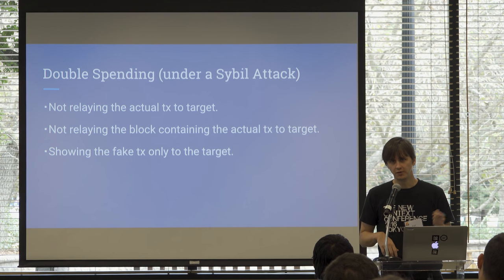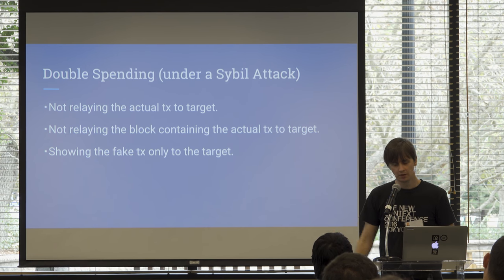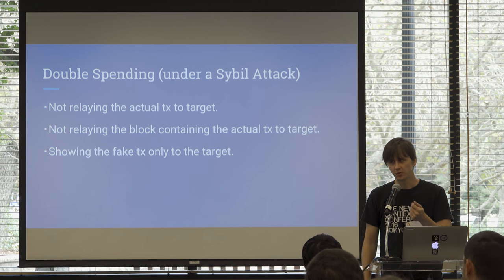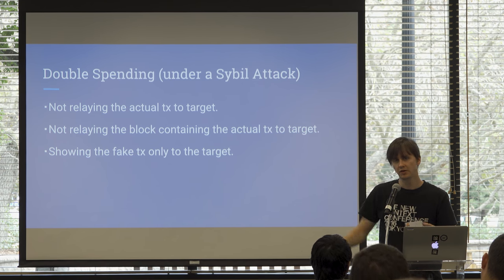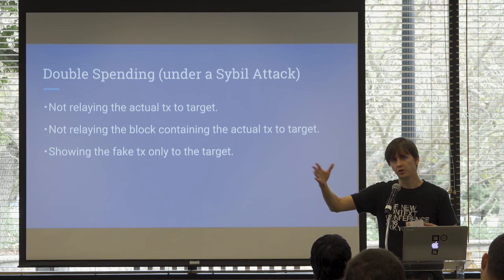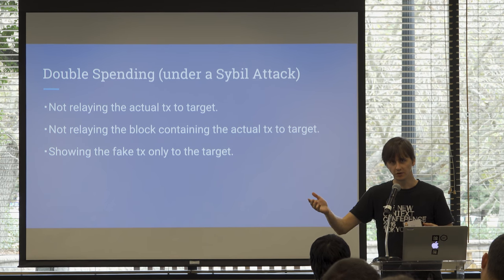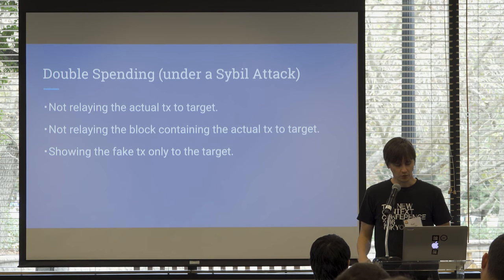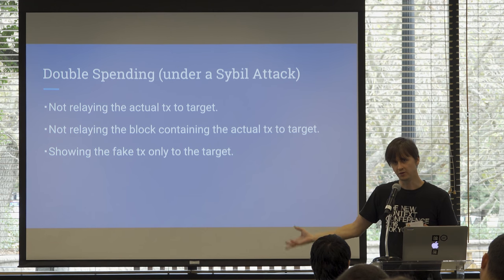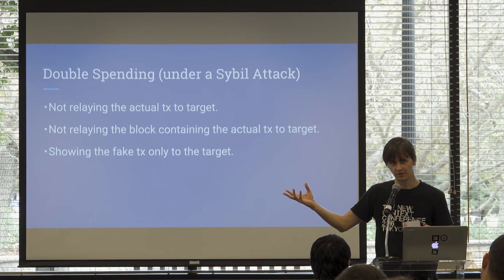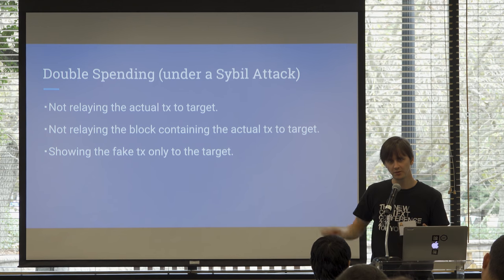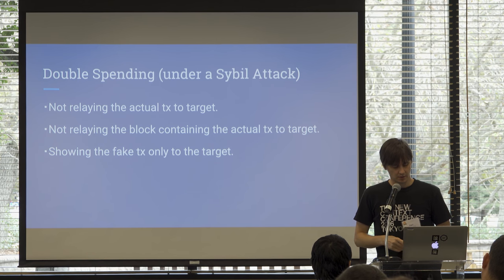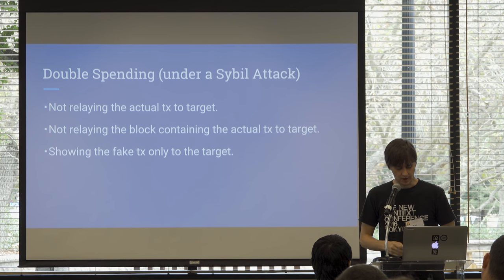Under a Sybil attack, you give the target one transaction, then put a conflicting one on the network. They only see your version, because even if other peers try to relay the real transaction, all those peers are controlled by you. When the actual block is found containing the invalidating transaction, you simply don't show it to them.